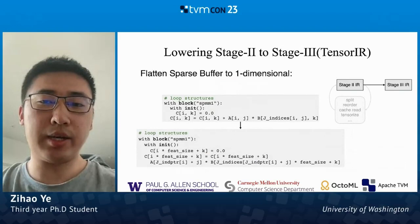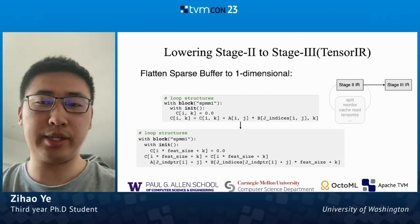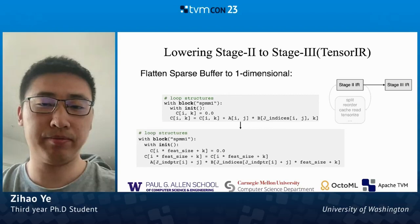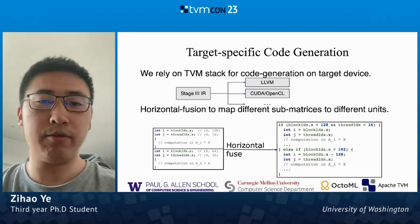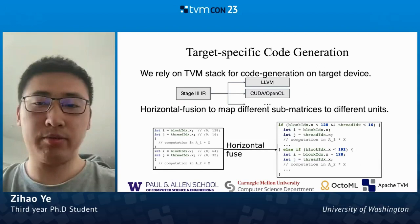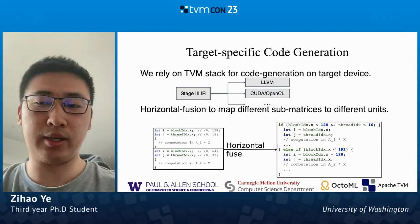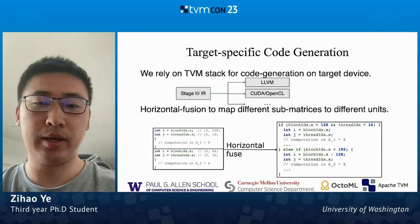The last step is to lower the Stage 2 IR to Stage 3, which is pure Tensor IR without any sparse structures. We remove sparse axes and sparse buffers during lowering; buffer axes to sparse buffers are transformed to buffer axes on their underlying one-dimensional flattened storage. After obtaining Tensor IR, the remaining work is left to the TVM stack, which generates code on different backends. For the GPU backend, we add a horizontal fusion pass to TVM, because composable formats incur multiple CUDA kernels — one per format — introducing extra kernel-launching overhead. This pass stacks different kernels into a single one and translates global block indices to local block indices, mapping computations for different sub-matrices to different streaming multiprocessors on the GPU.